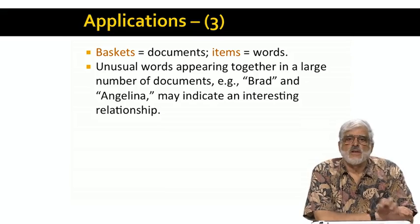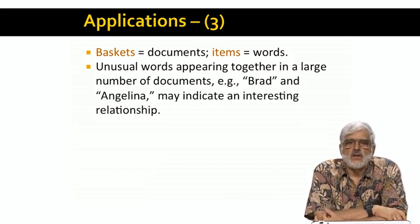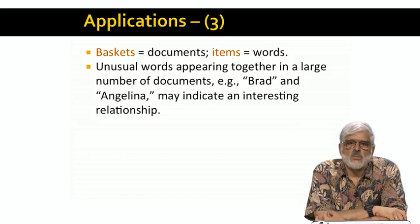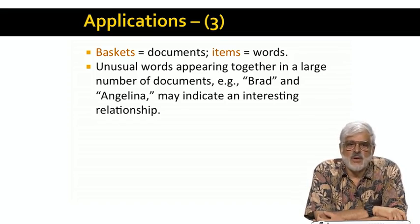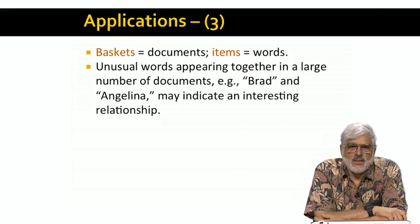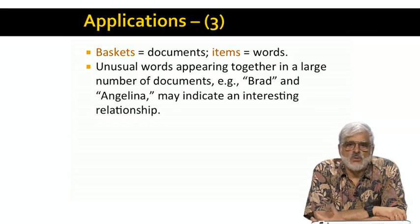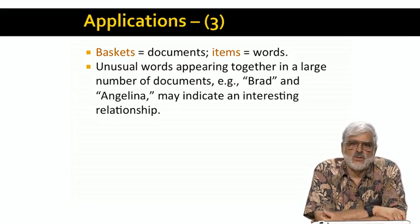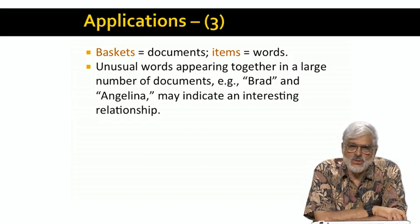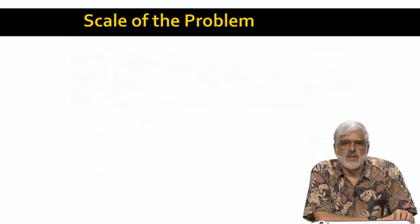Now, what does it mean if a set of items is frequent? That means we have a set of words that appear together in a large number of documents. By the way, that's another reason to get rid of all the words that are not pretty rare, or we'll just discover that words like the and and appear together in many documents. On the other hand, if rare words are relatively frequently found in the same documents, then there might be some connection between the words. I'm supposing, say, that Brad and Angelina might be two such words. Or is that old news? Probably is.